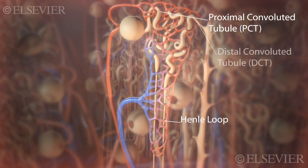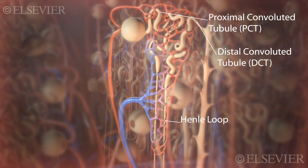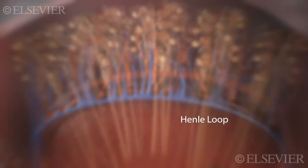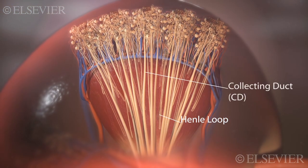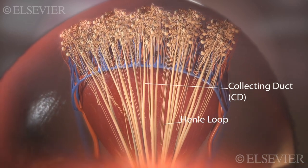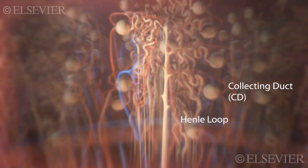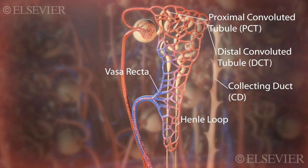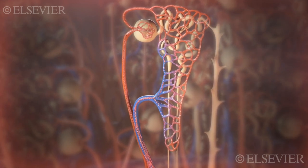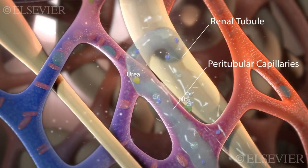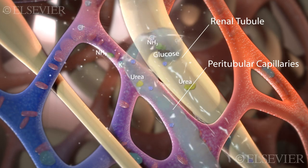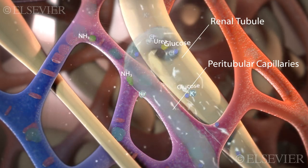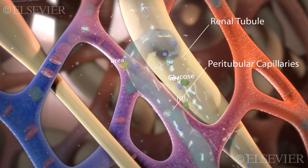The filtrate then passes through the loop of Henle and the distal convoluted tubule, or DCT. Most of the pyramid consists of nephron loops of Henle and collecting ducts. The renal tubules are surrounded by peritubular capillaries with vasa recta that extend into the pyramid. As filtrate continues through the renal tubule, most of the water, certain ions, and all of the glucose are reabsorbed back into the blood in the peritubular capillaries.